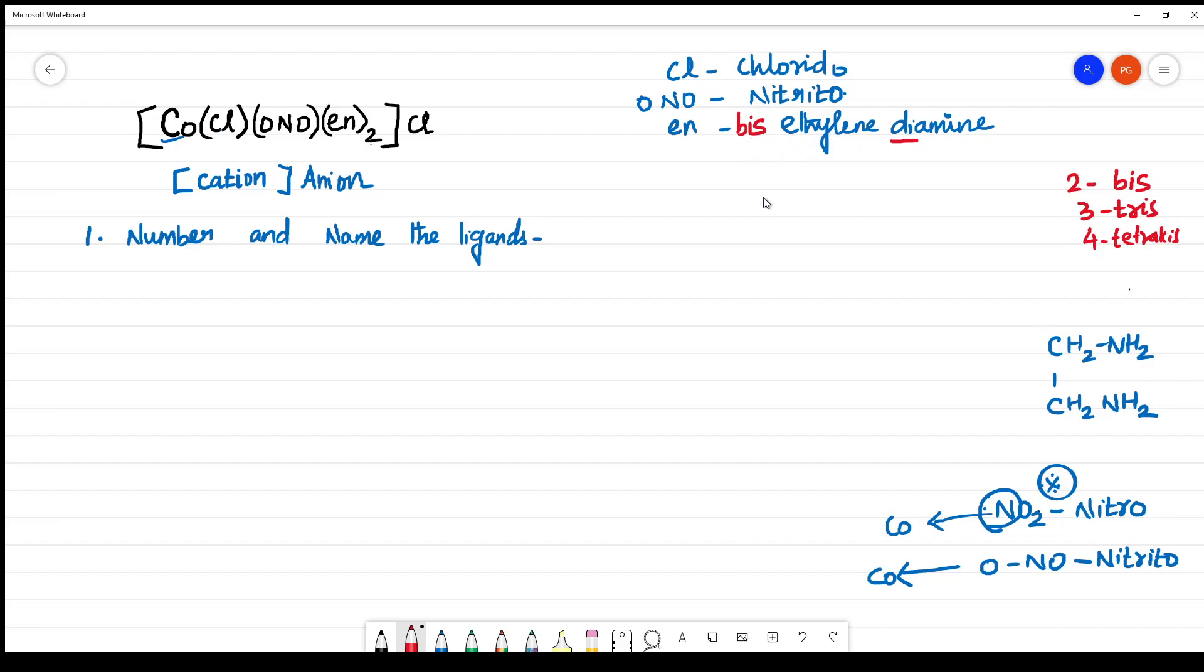And again naming the ligands, you have to see the alphabetical order. And while seeing the alphabetical order, the prefix will not be considered. You have to see only the alphabet of ligand. So which one will come? C will be first according to the alphabetical order, then E will be next, and then N. So how to write the name of the ligand? It is chloridobis ethylene diamine nitrito.